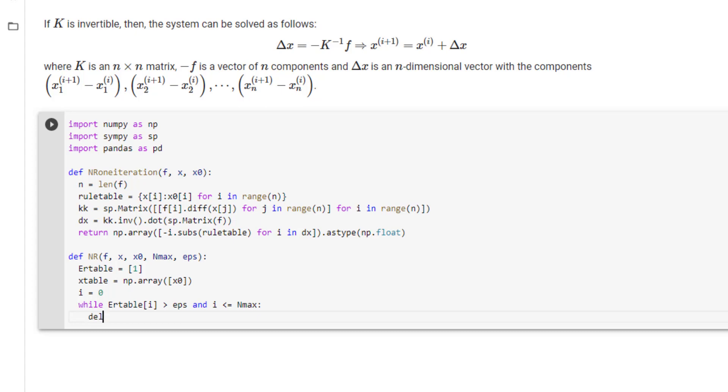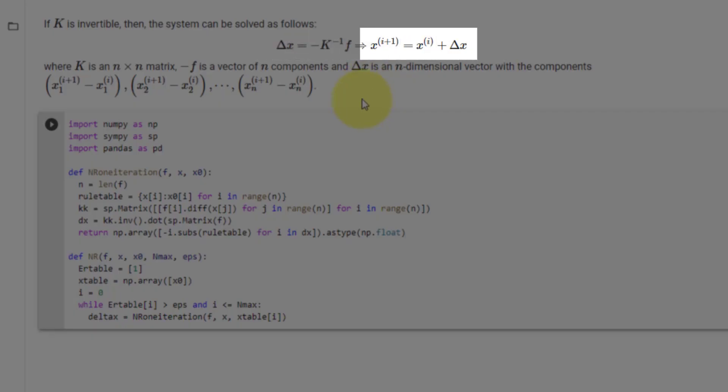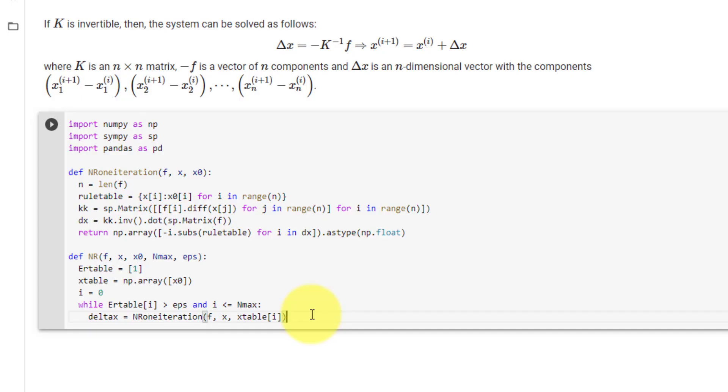The first step is to get our delta x from our first function, which is nr1iteration, and passing the values f, x, and x table at i. Now looking at the second part of our formula, we have to set x at i plus 1 equal to xi plus delta x, and we will set x at i plus 1 equal to nu x, which is equal to x table at i plus the delta x.